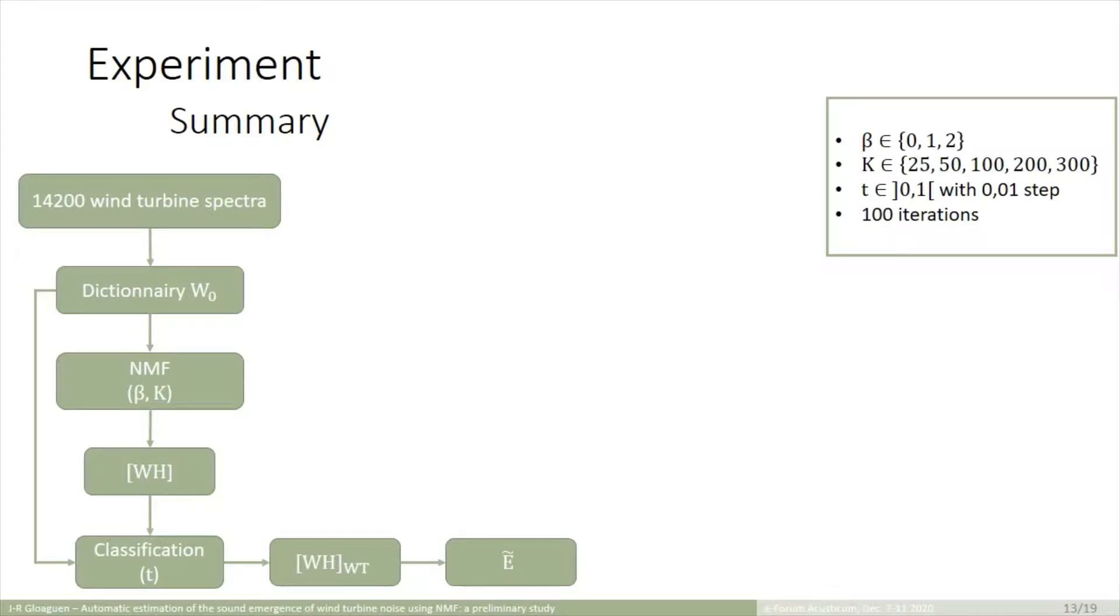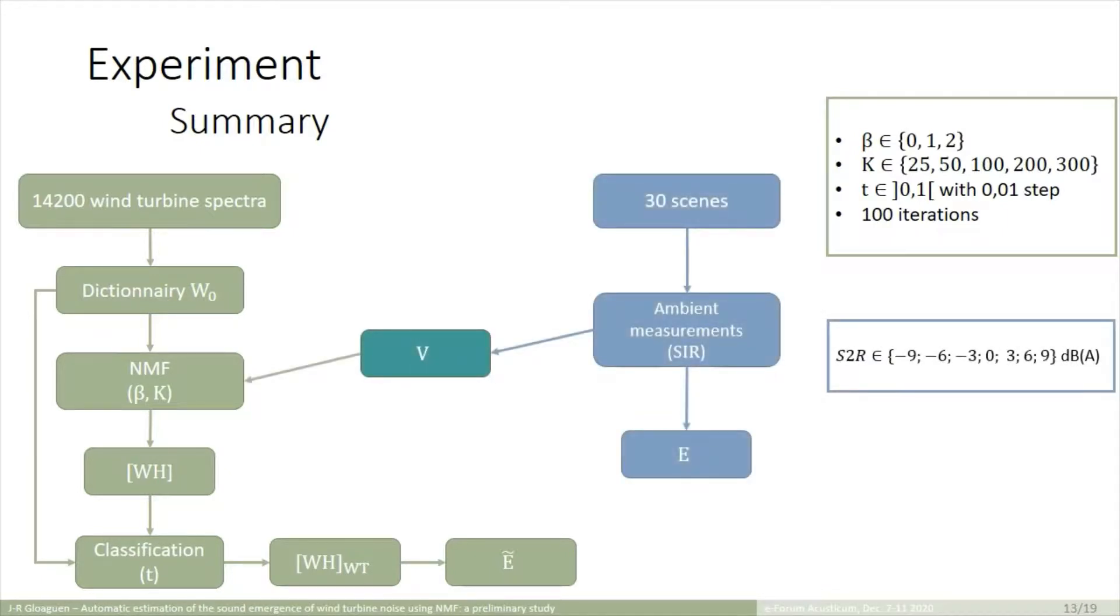To do this, we test several beta divergences, 0, 1, 2, different dictionary dimensions, K, and several T values with 0.01 step. And we perform, during the iteration process, 100 iterations. In parallel, we have 30 designed scenes, each of them defined for several S2R values.